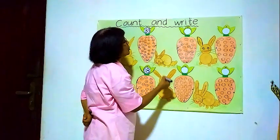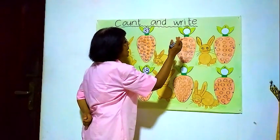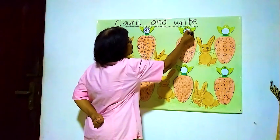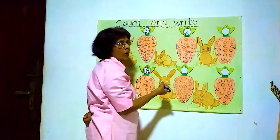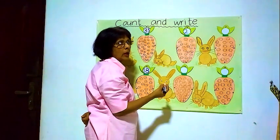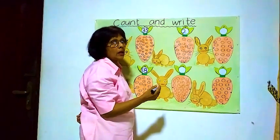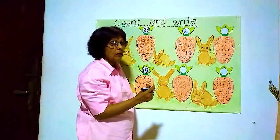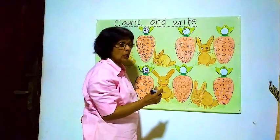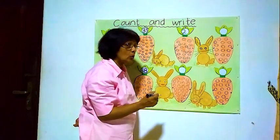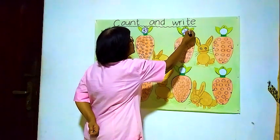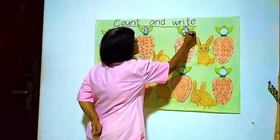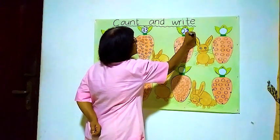There are twenty-two balls inside this carrot. How to write twenty-two? If I write two and one, the number is twenty-one. If I write two and five, that's twenty-five. I want to write twenty-two — two and two. Two and two is twenty-two. This is how we write twenty-two.